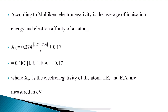The Mulliken scale states that electronegativity is the average of ionization energy and electron affinity of an atom. This is given by: X_A = 0.374 × (IE + EA)/2 + 0.17, which simplifies to X_A = 0.187 × (IE + EA) + 0.17, where X_A is the electronegativity of the atom, and IE (ionization energy) and EA (electron affinity) are measured in electron volts. This is how we determine electronegativity by either the Pauling scale or the Mulliken scale.